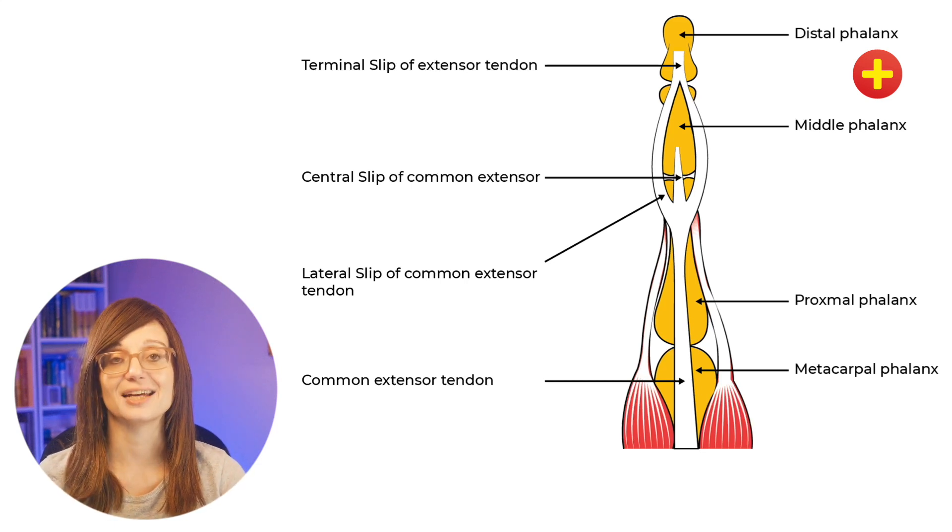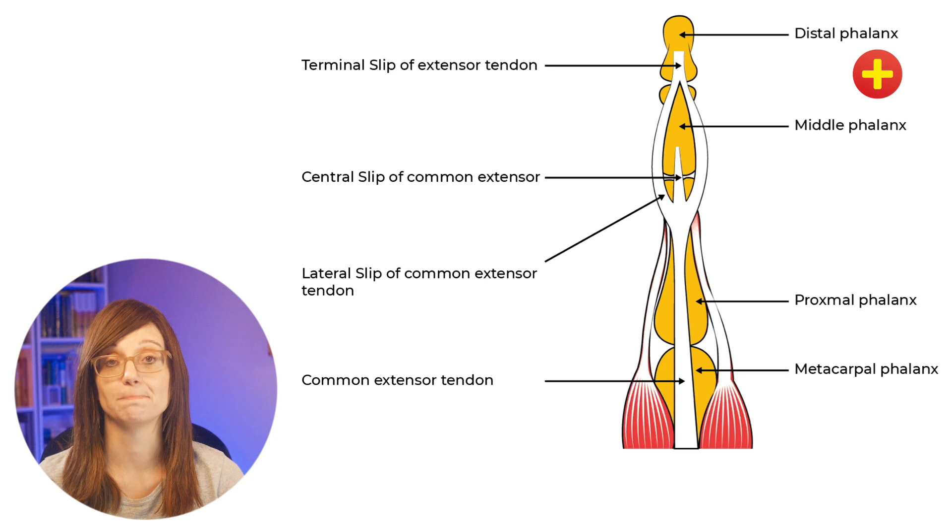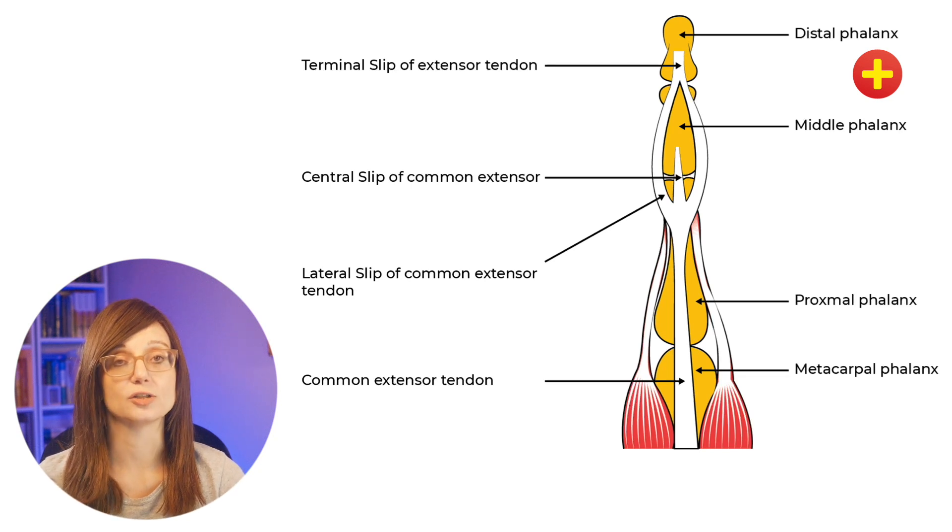So you've got the central slip that extends the middle phalanx at the PIPJ and then you've got the terminal extensor tendon which extends at the DIPJ. And in the thumb, you've got the extensor pollicis longus which extends the thumb at the IPJ.